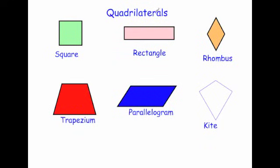In this video we're going to look at quadrilaterals — their names and the properties of each. The six different quadrilaterals you may be asked about in exams are: a square, a rectangle, a rhombus, a trapezium, a parallelogram, and a kite. Let's start off by looking at the square.